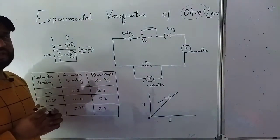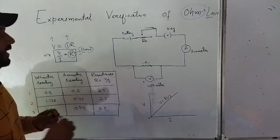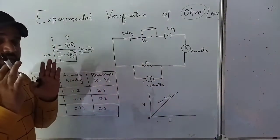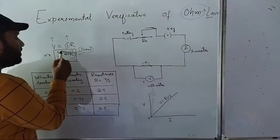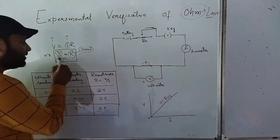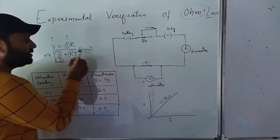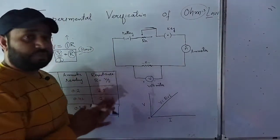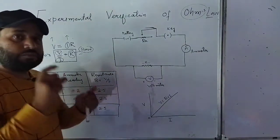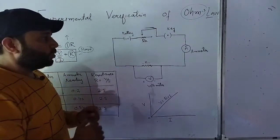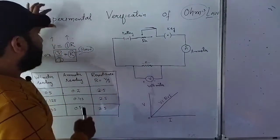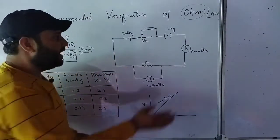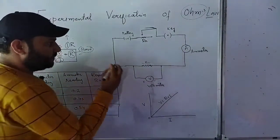Resistance we will study in a separate topic. But here, what you have to see is: if we have to experimentally verify Ohm's law, you have to prove that the ratio of potential difference and the current is always a constant - that constant is called resistance. For that, you must first understand the experimental setup, and you must know how to draw the electric circuit.